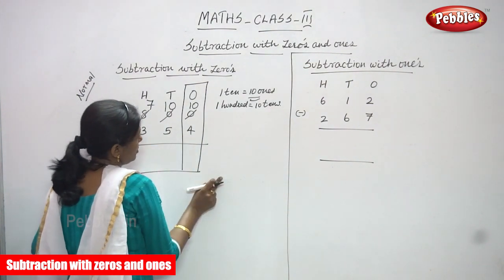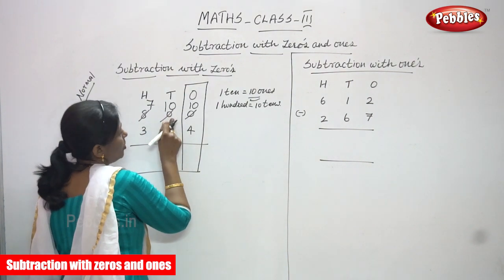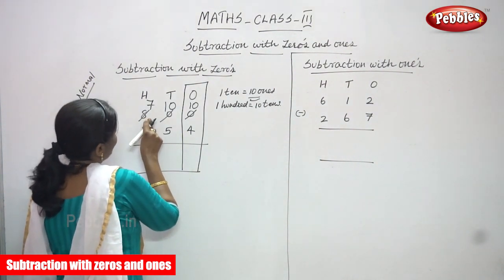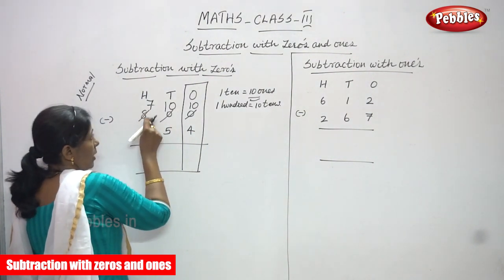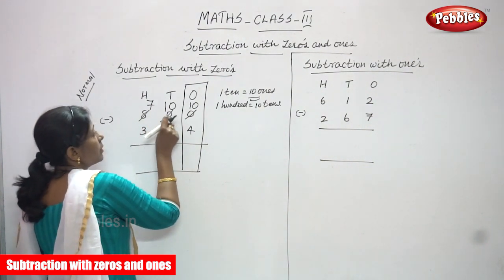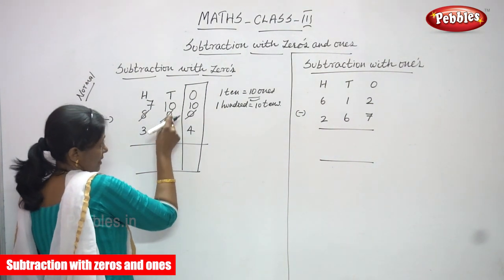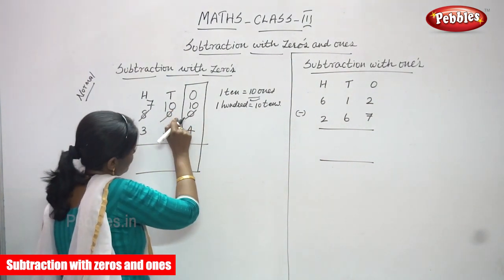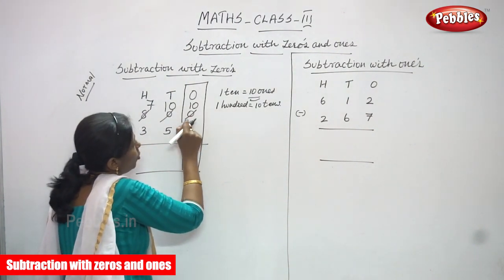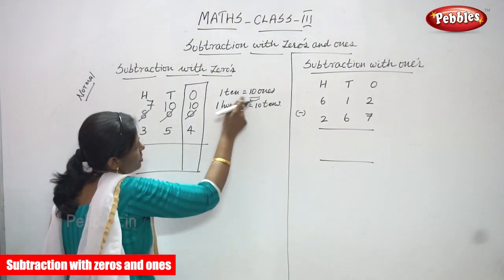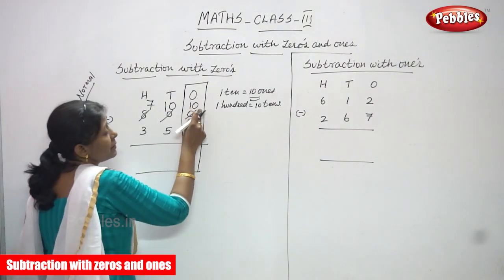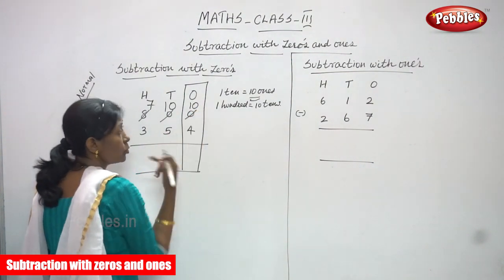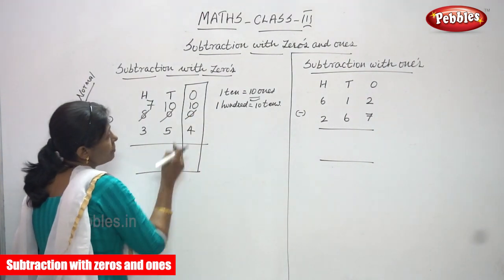Zero minus four is not practically possible to subtract here. So I am going to borrow from tens, but here also zero — so you can't subtract. You have to borrow from hundreds. So I am borrowing only one from this place — that means eight hundred becomes seven hundred. So I am borrowing only one hundred from this particular place. Now this tens place zero becomes ten — that is ten tens. Ten tens means you can get one hundred. From this particular tens place I am borrowing only one ten, so this ones place zero becomes ten. That means ten ones equals one ten. So now the ones place number is greater than four — ten is a greater number than four.